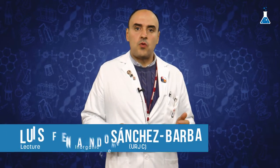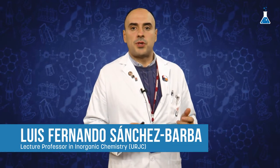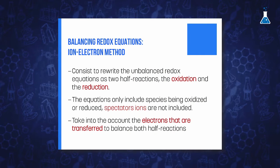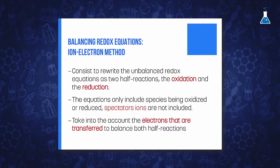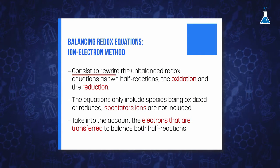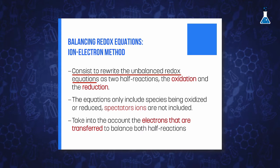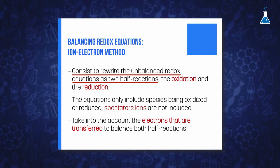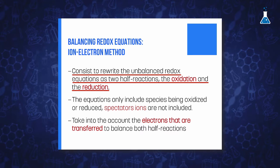An alternative, well-known method in order to balance redox equations is the ion-electron method. This is the simplest and more versatile method and consists of rewriting the unbalanced redox equation as two half-reactions: the oxidation and the reduction.